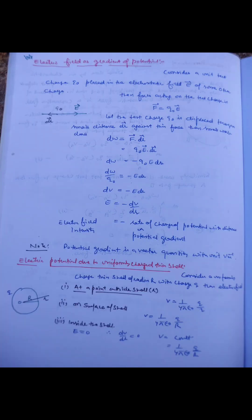We also find electric potential due to a uniformly charged thin shell at points outside the shell, on the surface of the shell, and inside the shell.